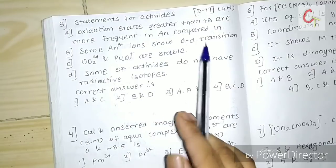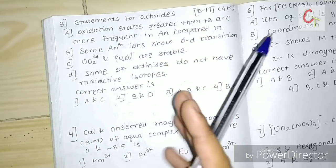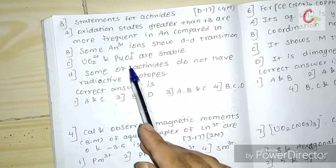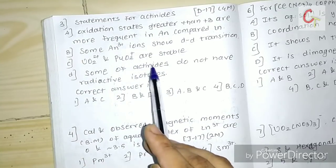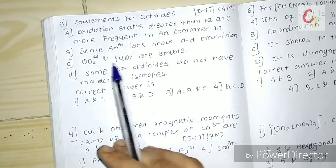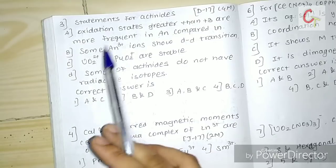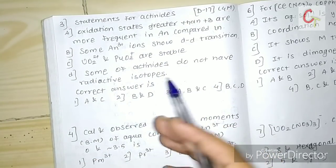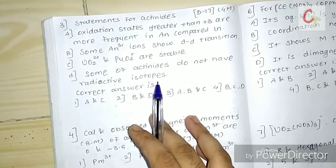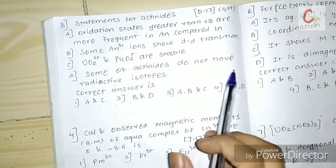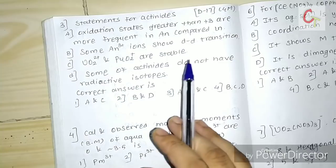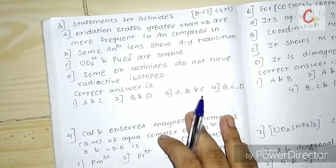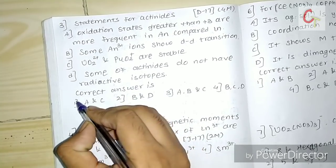The second statement says actinides show f-f transitions like lanthanides — this is correct. The third statement says uranium and plutonium oxides are stable — this is correct because uranium occurs in +4 oxidation state which is stable. The fourth statement says some actinides do not have radioactive species — this is wrong because many actinides are radioactive. Therefore the answer is the third statement.